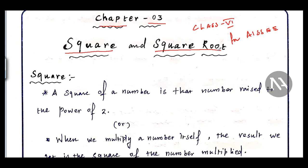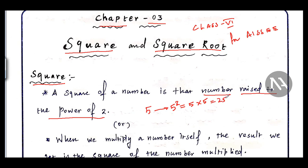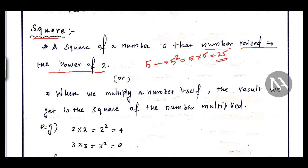First we will see what is a square. Square of a number means a number raised to the power of 2. For example, the square of 5 is 5 raised to the power 2, that is 5 into 5, which equals 25. So the square of 5 is 25.